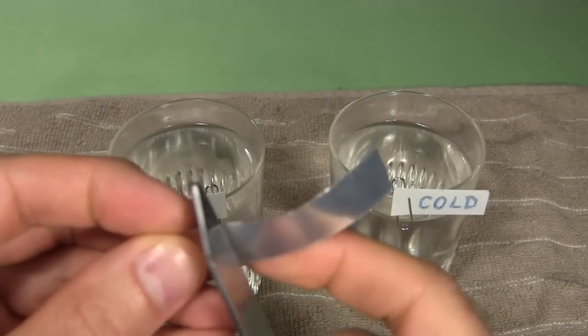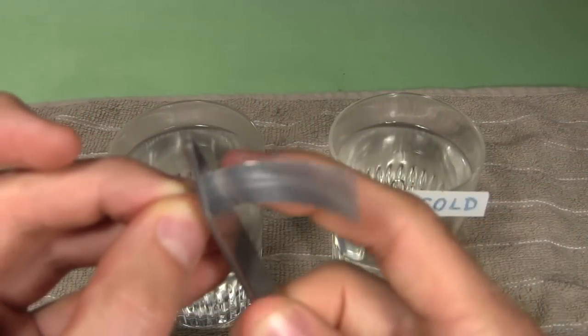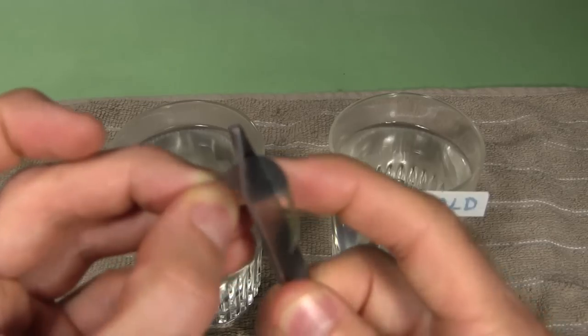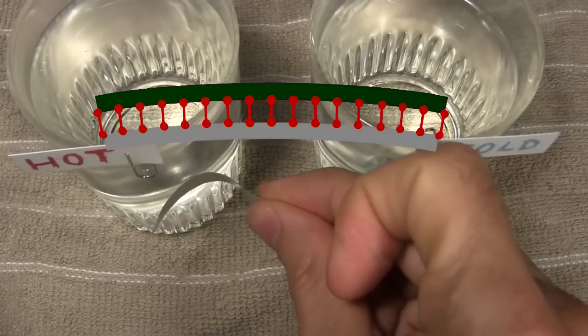Instead of starting with the straight strip, we can also give the strip a pre-curved shape. Here I hold the blunt edge of a pair of scissors against the foil side and press on the other side with my finger as I pull along the foil.